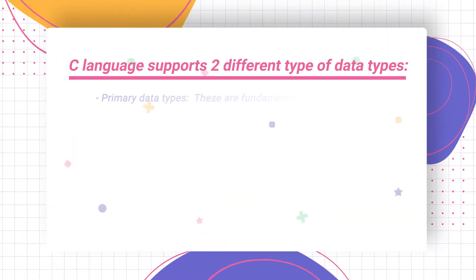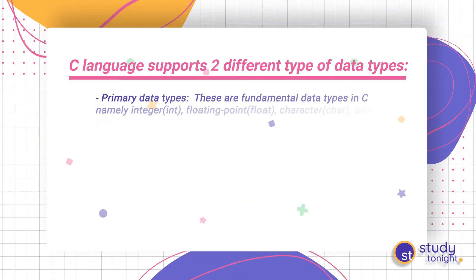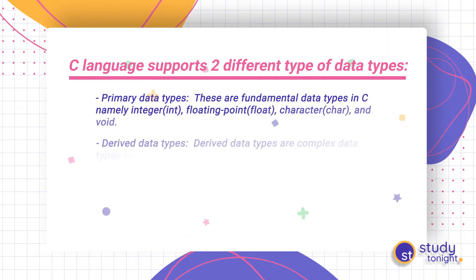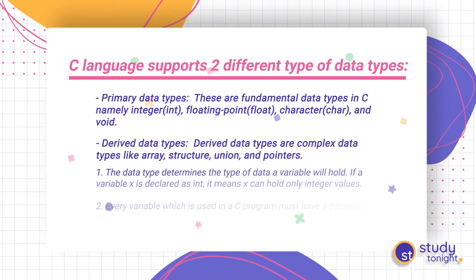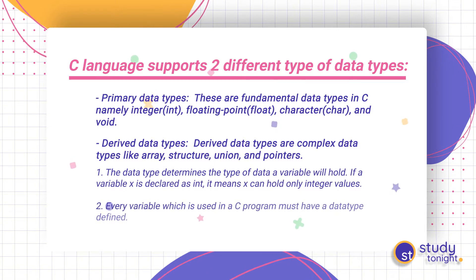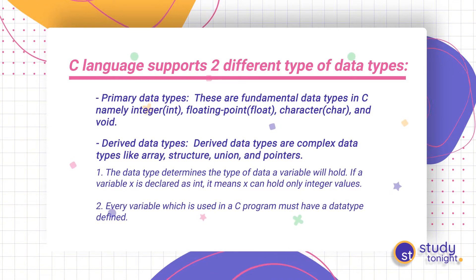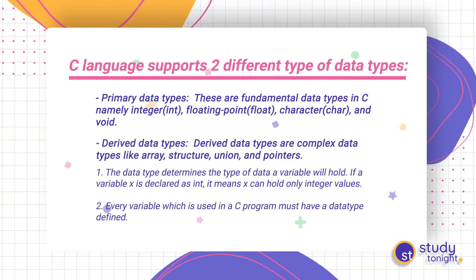So first, what are these different data types? C language supports two different data types: primary data types and derived data types.